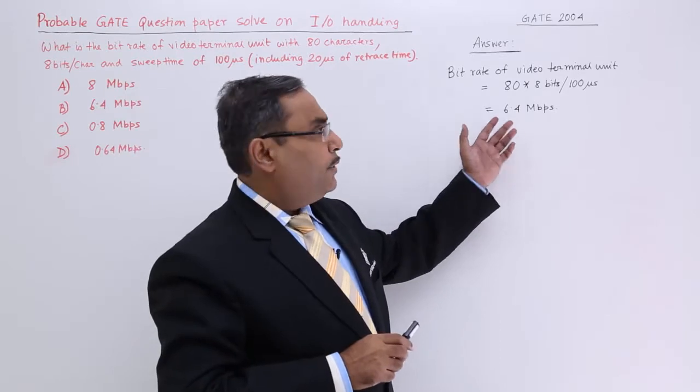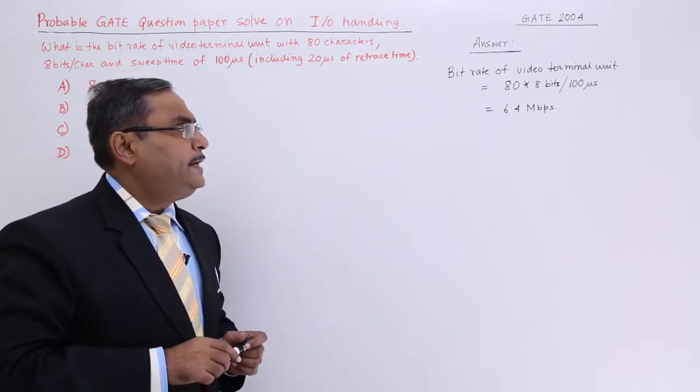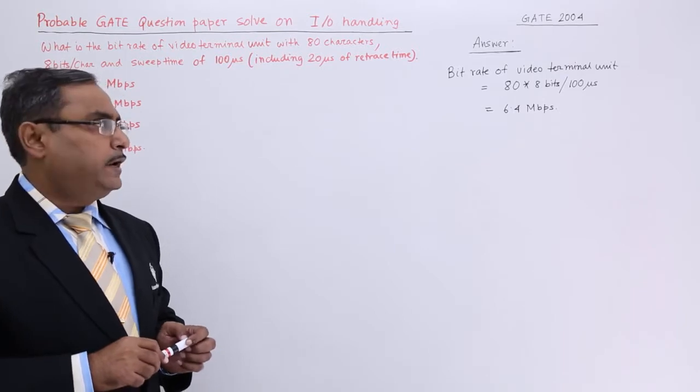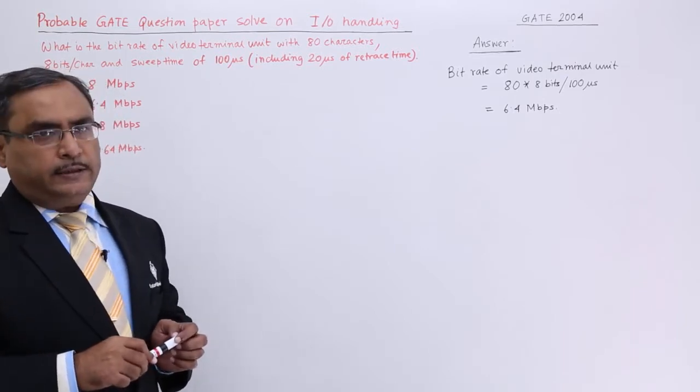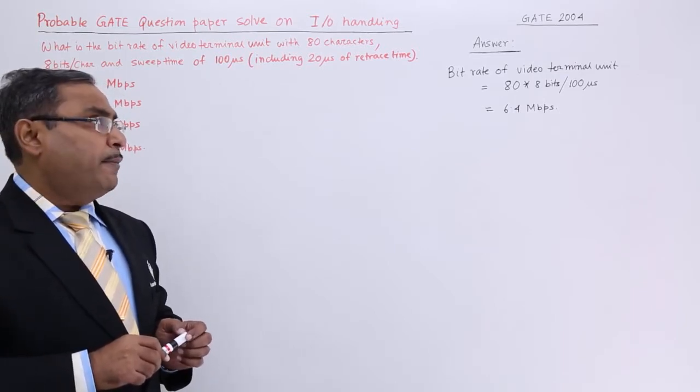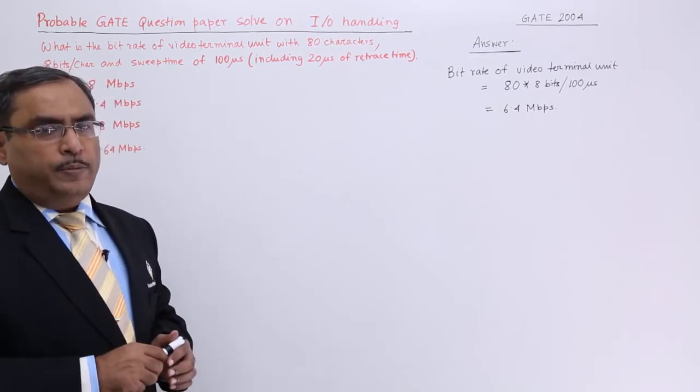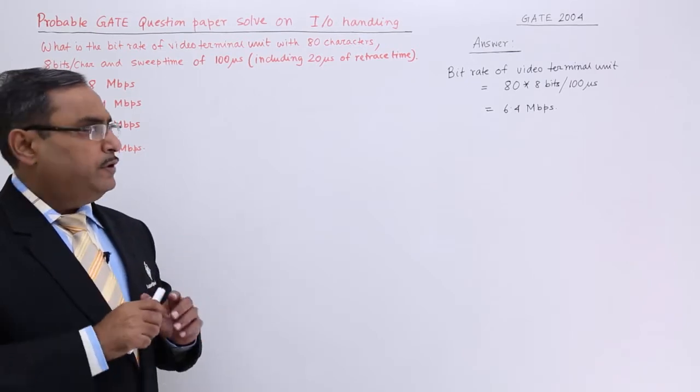This question can be solved in a very easy way where having 80 number of characters on the screen at a time can be displayed and 8 bits per character. That means this amount of data, that is 80 into 8, this amount of bits will be required for one screen full of information.